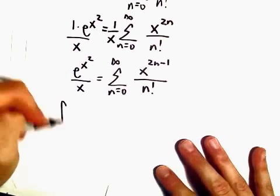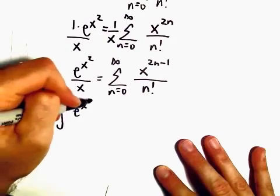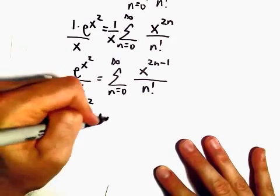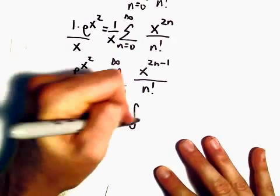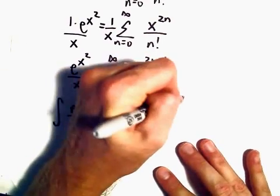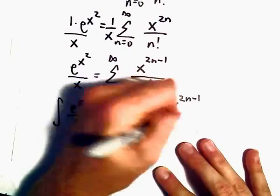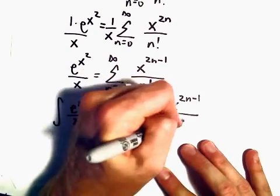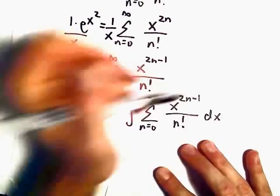Now we're going to integrate both sides. The integral of e^(x²)/x dx equals the integral of the series from n=0 to infinity of x^(2n-1) over n factorial dx.